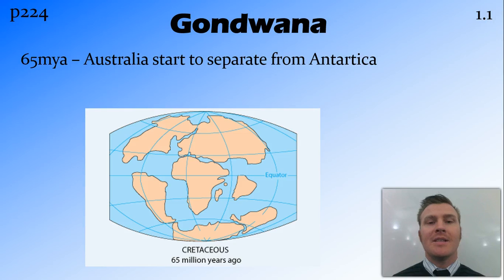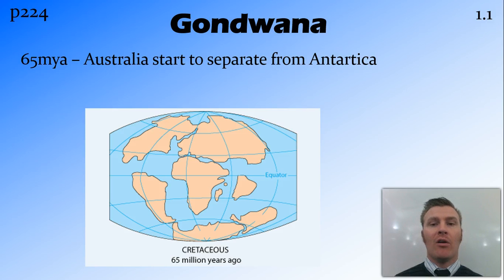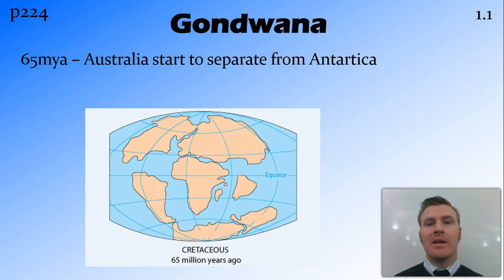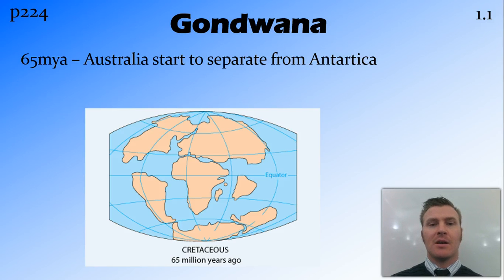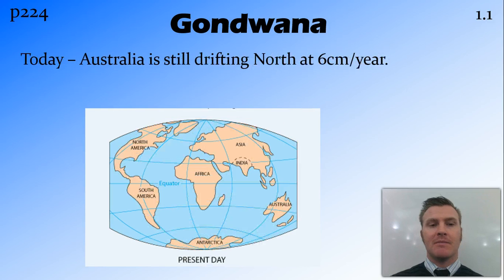Then 65 million years ago, Australia starts to separate from Antarctica — the final breakup of Gondwana. This goes on for about 20 million years, and about 45 million years ago Australia is fully separate from Antarctica. So we've been a separate continent for 45 million years.